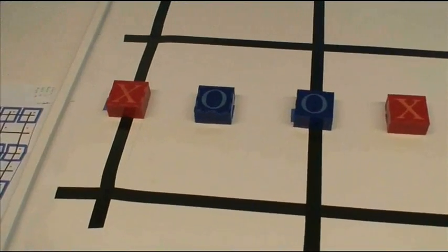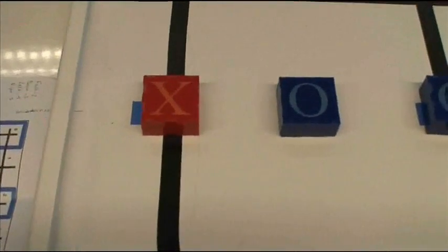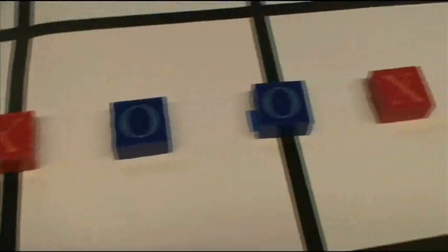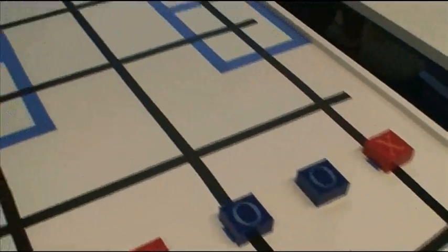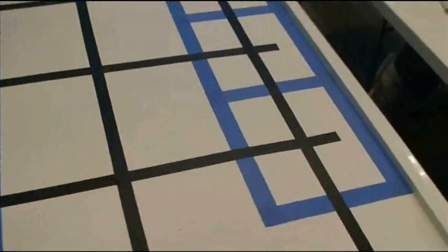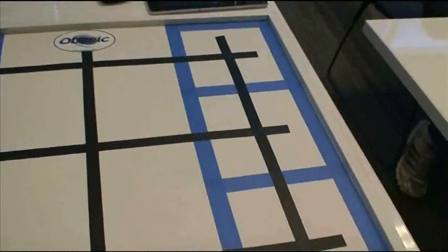We have different colored blocks, red and blue with X's and O's on them. And then we also have each location in the tic-tac-toe board separated by these blue squares.